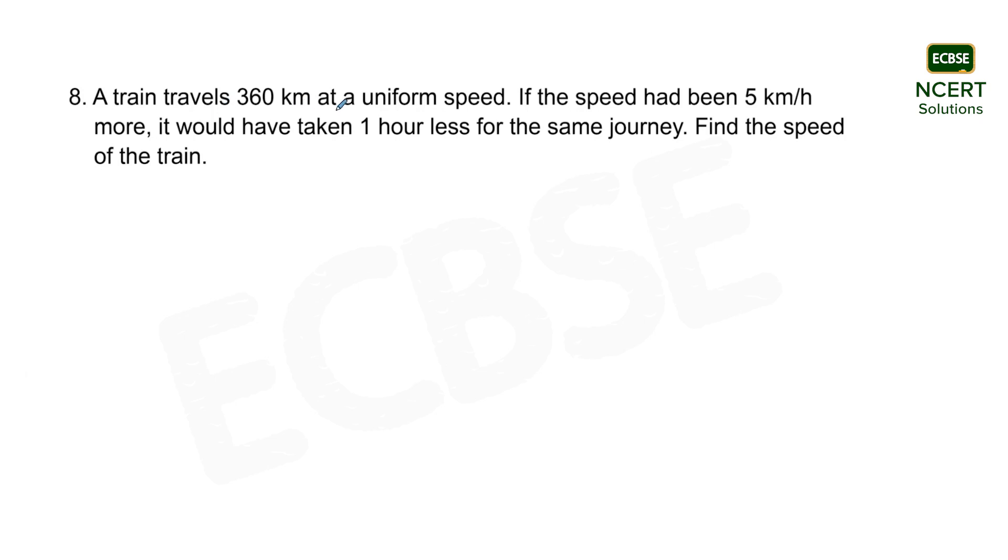A train travels 360 km at a uniform speed. If the speed had been 5 km per hour more, it would have taken 1 hour less for the same journey. Find the speed of the train.